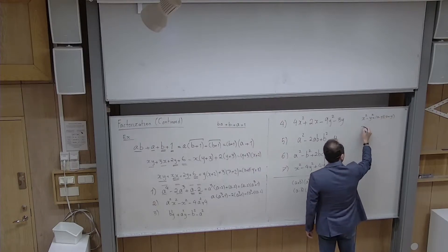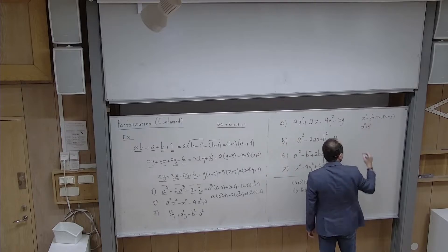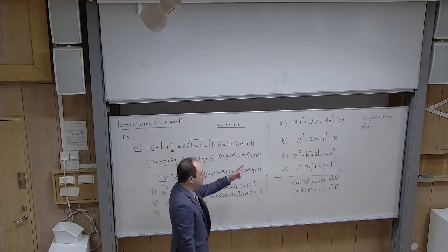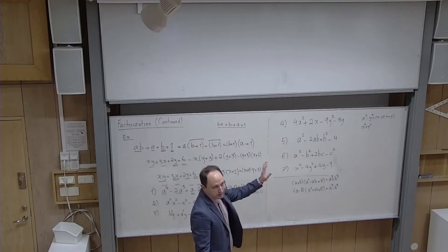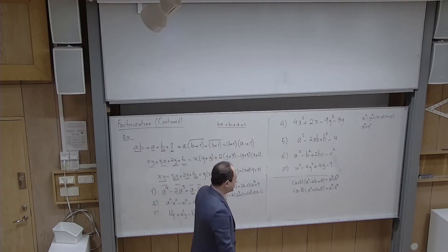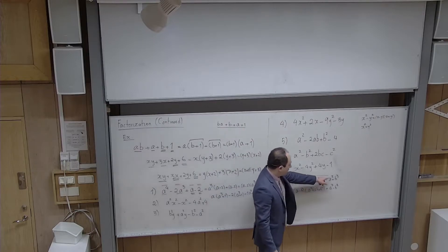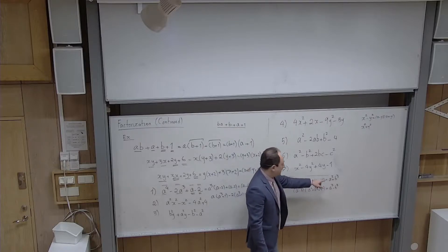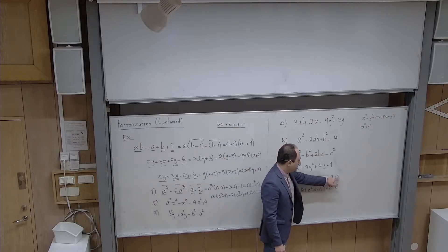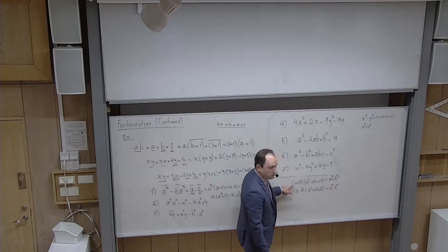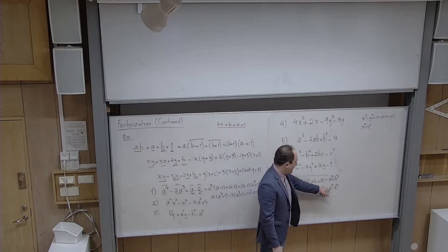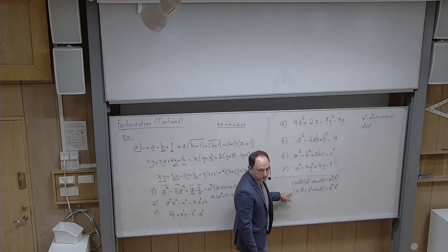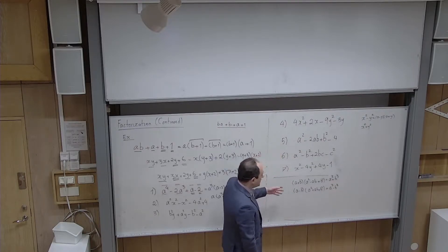For problem 2: a²x² − x² − 4a² + 4. I take the first two terms together and the last two together. From x²(a² − 1) and then −4(a² − 1) — wait, I should pull −4 out from −4a² + 4, giving −4(a² − 1). Now (a² − 1) is the common factor. Pulling it out: (a² − 1)(x² − 4). This is not complete — both factors follow the conjugate rule.